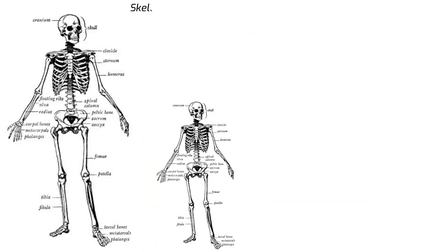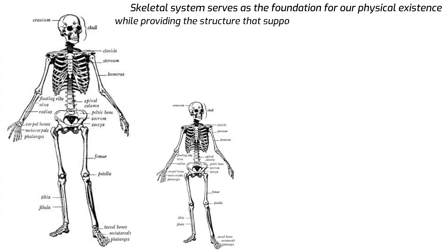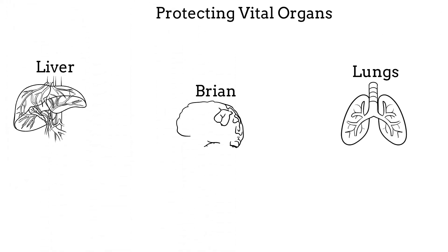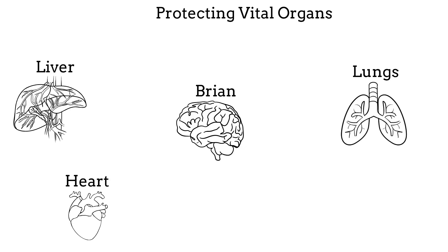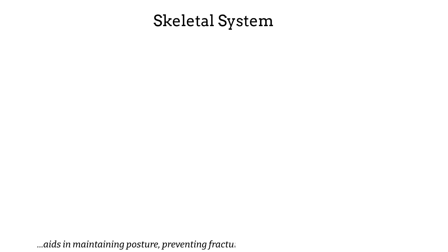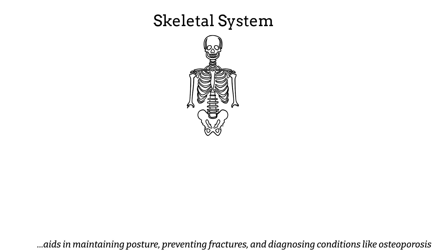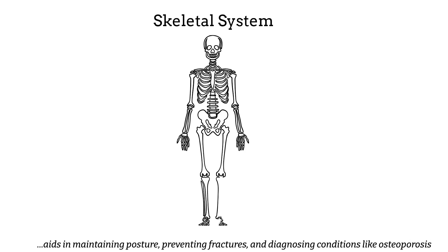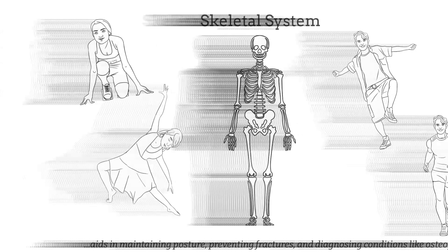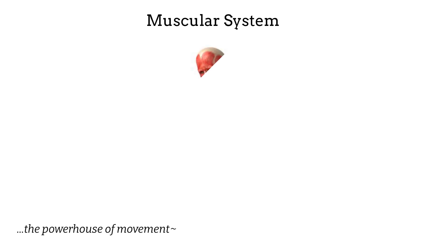The skeletal system serves as the foundation for our physical existence, providing the structure that supports the body's stability and mobility, while also protecting vital organs such as the liver, lungs, brain, heart, and kidneys. Understanding how the skeletal system aids in maintaining posture, preventing fractures, and diagnosing conditions like osteoporosis is empowering. This system creates the framework that allows us to dance, run, and simply live life to the fullest.